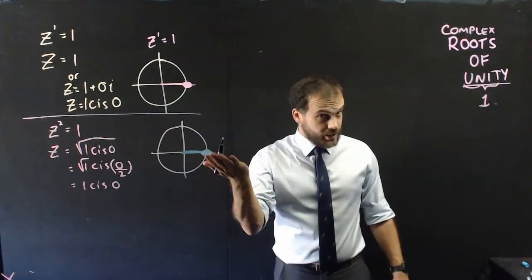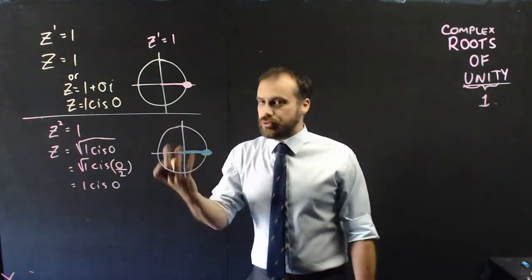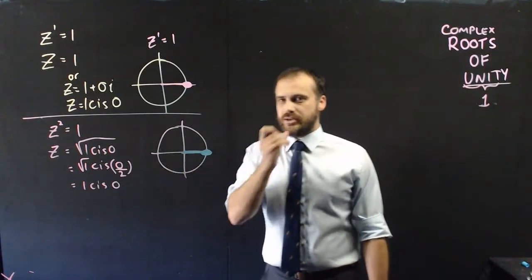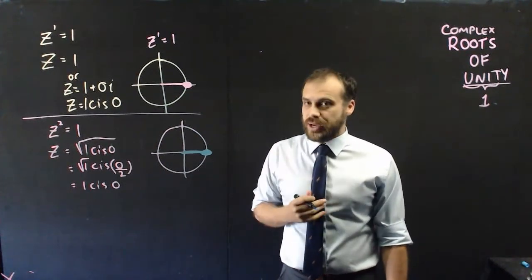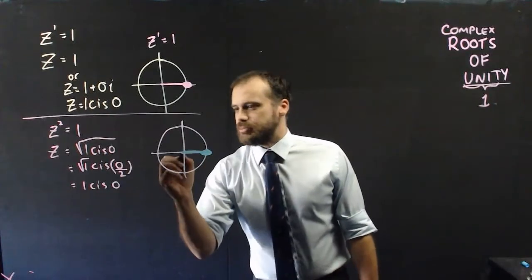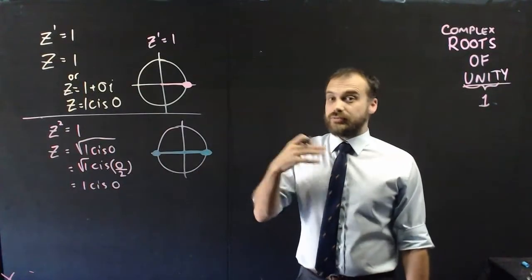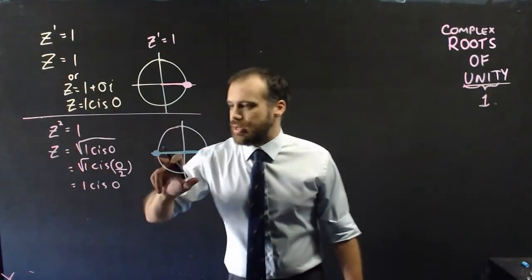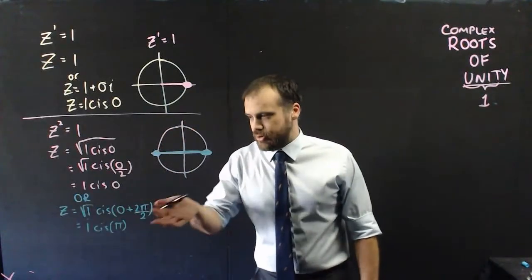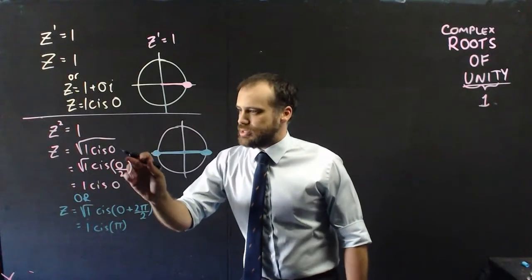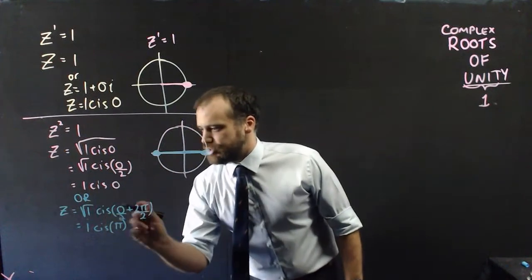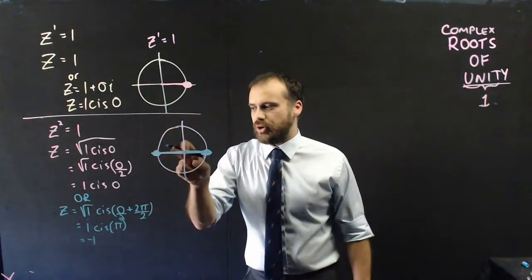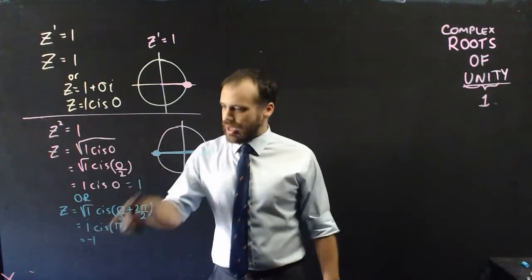Which is of course 1 on an Argand diagram. When you take the nth root of a complex number, and 1 is our complex number, you're going to get n evenly spaced answers on our Argand diagram. So I'm going to get two answers, evenly spaced — one of them is there, which means the other one must be there. Our two answers are positive 1 and negative 1, with no imaginary components. One answer was cis(0/2) = cis 0; the other is cis(0/2 + 2π/2) = 1 cis π, which is of course negative 1. So our two answers are 1 and −1.